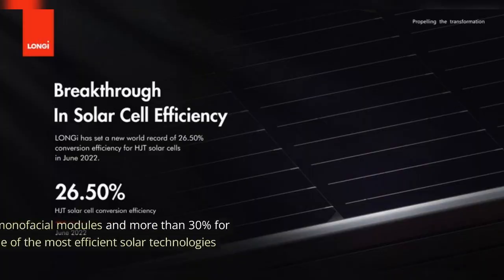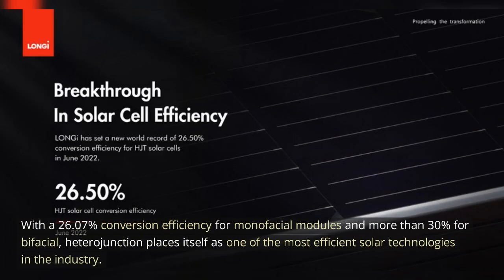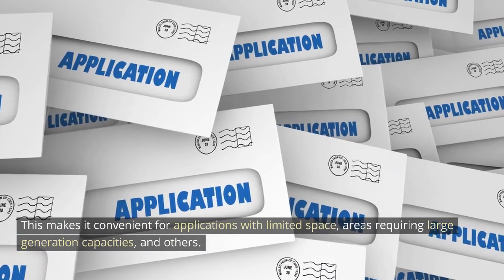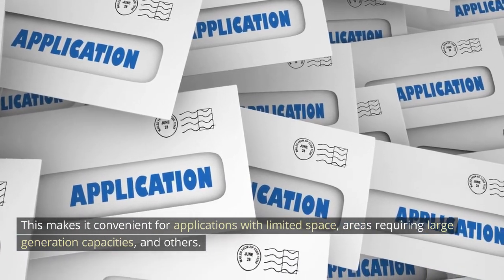High efficiency. With a 26.07% conversion efficiency for monofacial modules and more than 30% for bifacial, heterojunction places itself as one of the most efficient solar technologies in the industry. This makes it convenient for applications with limited space, areas requiring large generation capacities, and others.